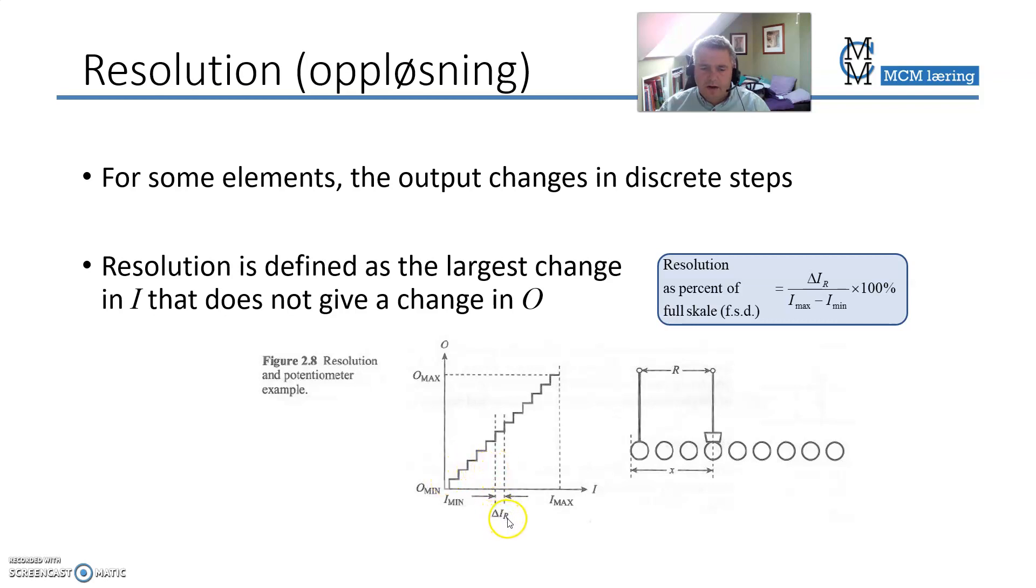So resolution is defined as the largest input you can do without a change in the output. So here is Delta I_R input resolution. You can actually go from here to this dotted line all the way to here without a change in the output. Ideally, this ideal Delta I_R should be as small as possible. That would mean that you have a high resolution. You have a lot of steps on the way up here, so the line becomes almost as a continuous line without the steps if the steps are small enough.